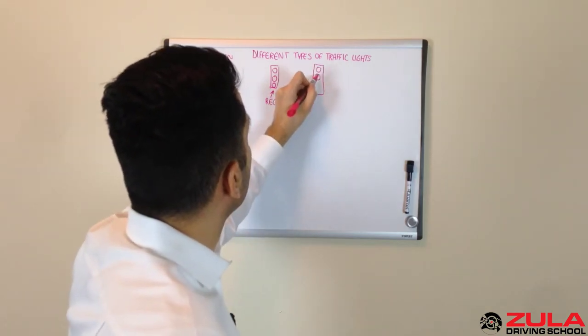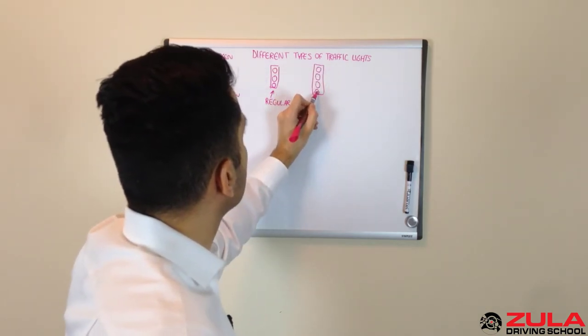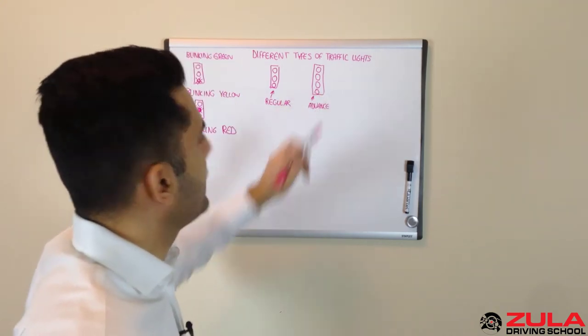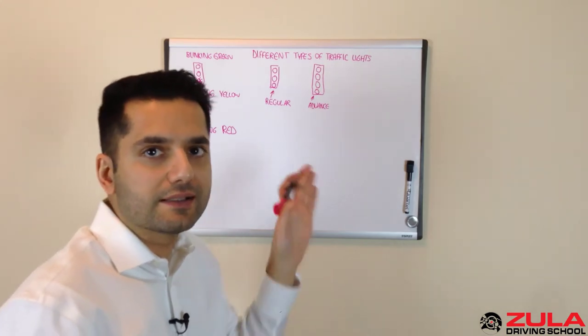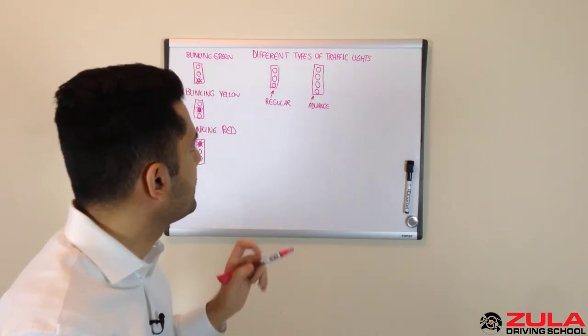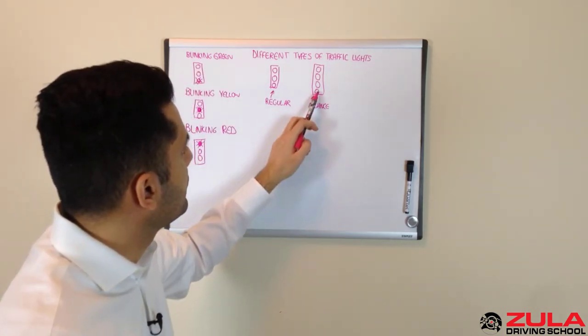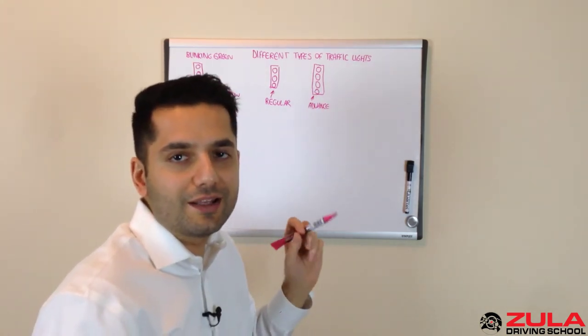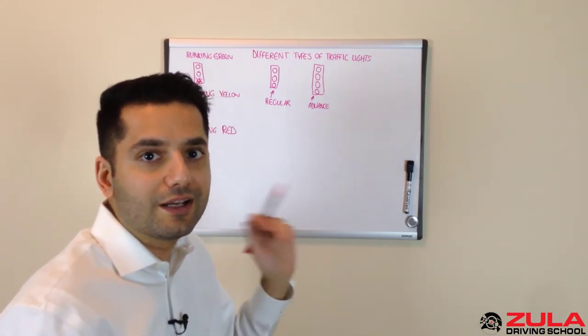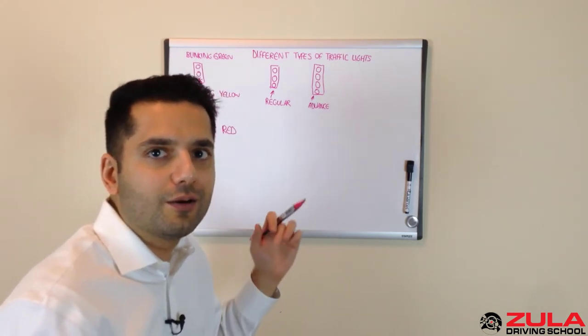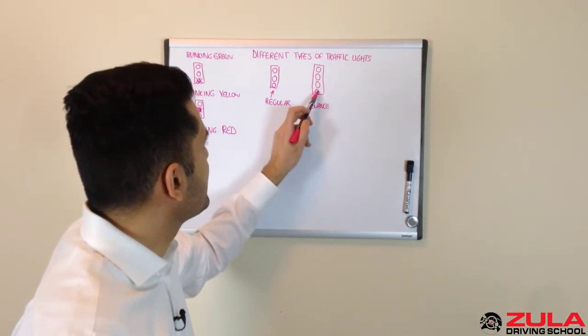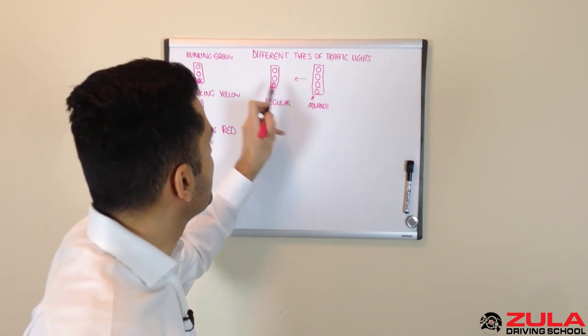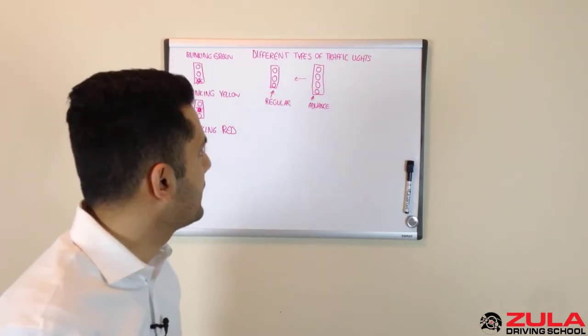Then you've got the four circle one where usually this one is an advance and this one at certain times will give you an arrow indicating that you get an advance left turn or an advance right turn. Usually you get a blinking green arrow and then the blinking green arrow gets quicker and then it goes to a yellow arrow and then it disappears. Once it disappears this light turns off and you end up going to just a regular intersection light.